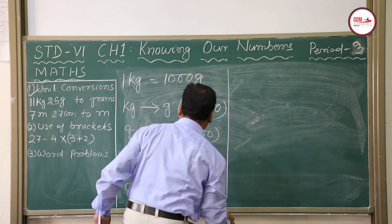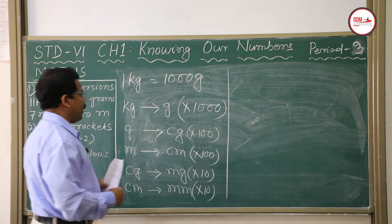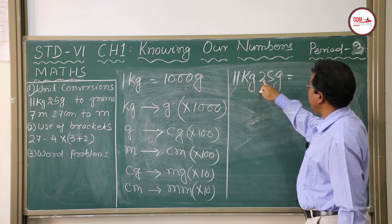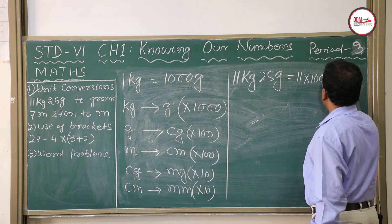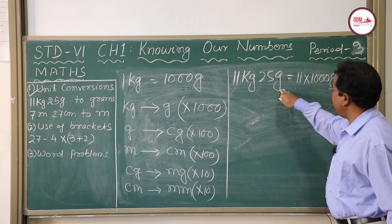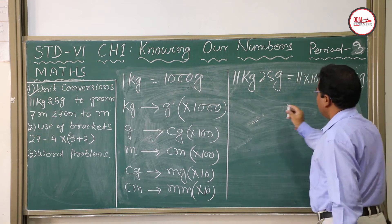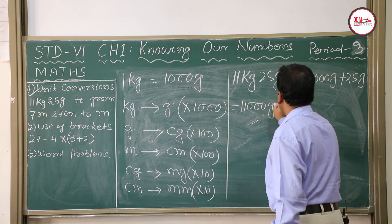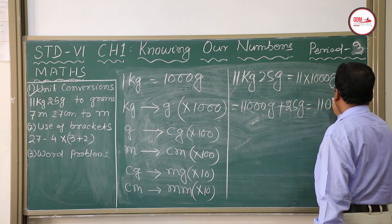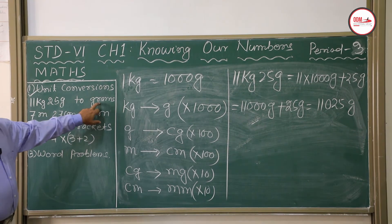Now solving: 11 kg 25 grams to grams. 11 kg equals 11 × 1000 = 11,000 grams. Then 11,000 grams plus 25 grams equals 11,025 grams. That is how you convert 11 kg 25 grams to grams.